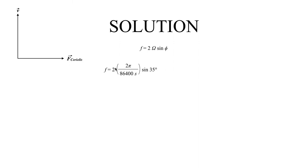It would just be 2 times Earth's angular velocity, which is 2π radians over 86,400 seconds, times the sine of our latitude. If we evaluate that out, we get 8.36 × 10^-5 radians per second.